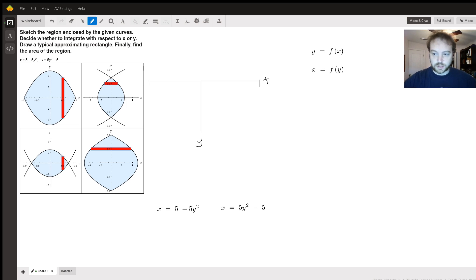There's a slight twist on this one, which is they've interchanged the variables. So the question is to sketch the region enclosed by two curves, decide how to integrate it to find the area, and then find the area of the region. They also have you draw a rectangle. And then the two curves are x equals 5 minus 5y squared and x equals 5y squared minus 5.